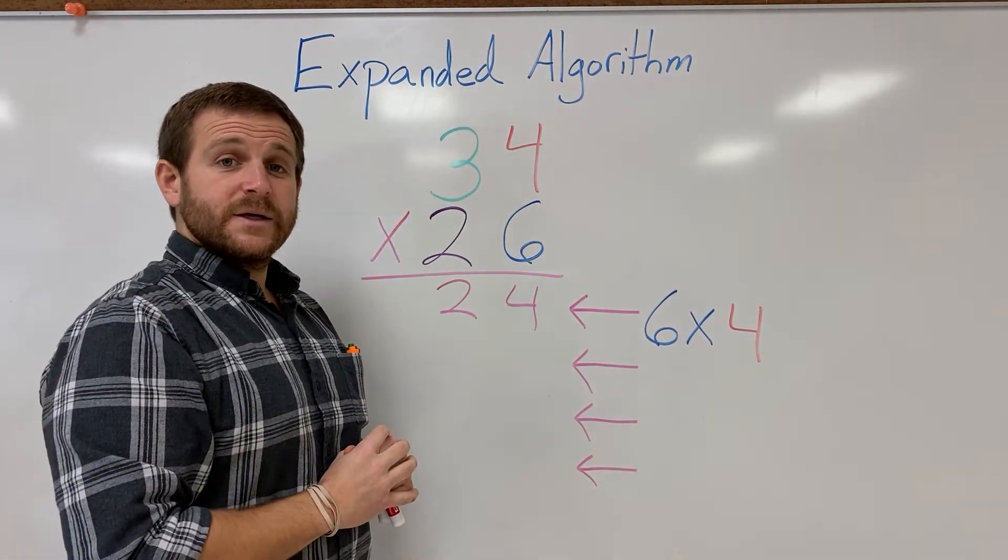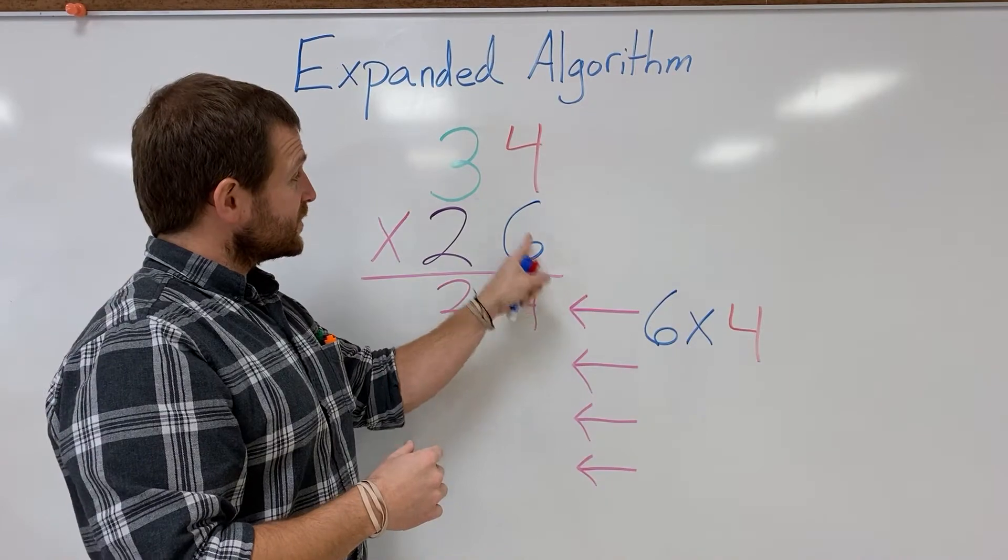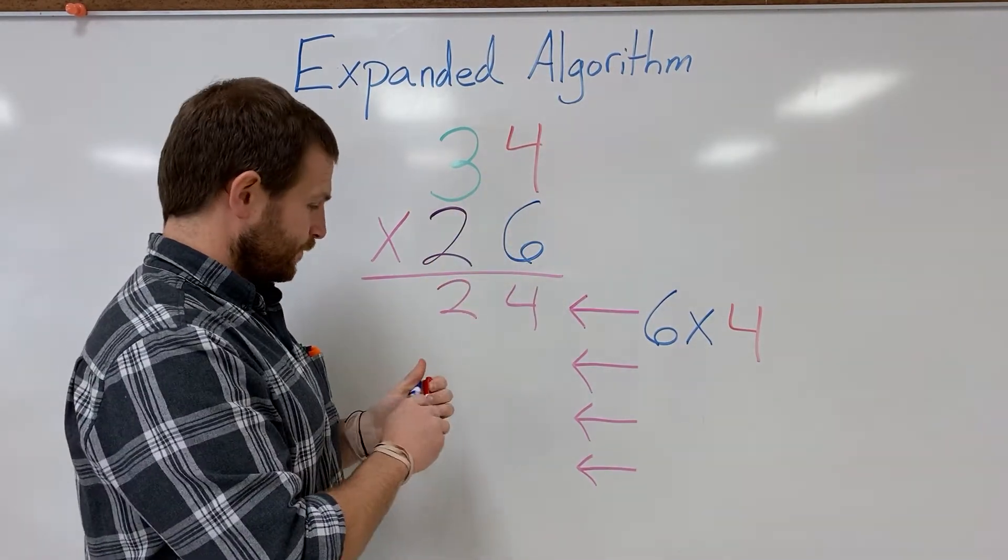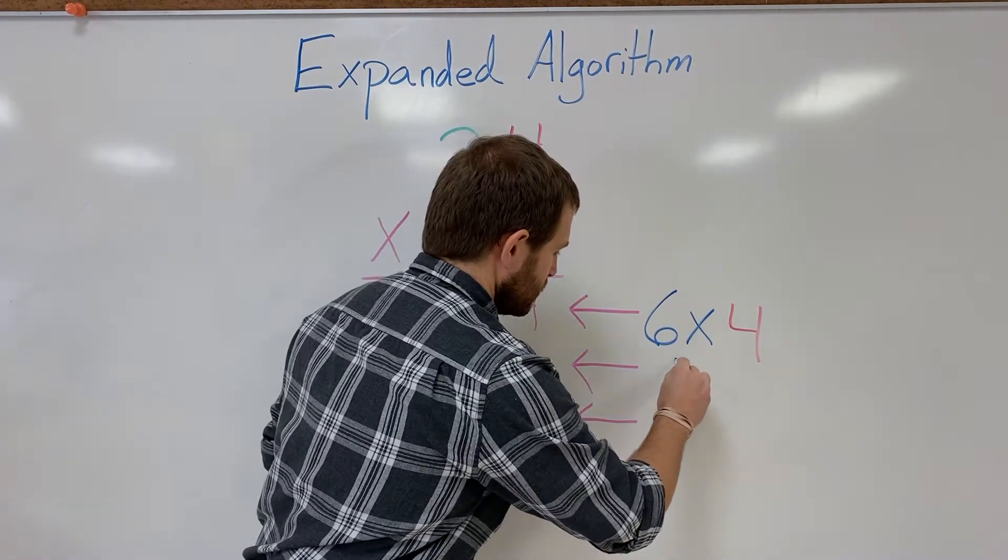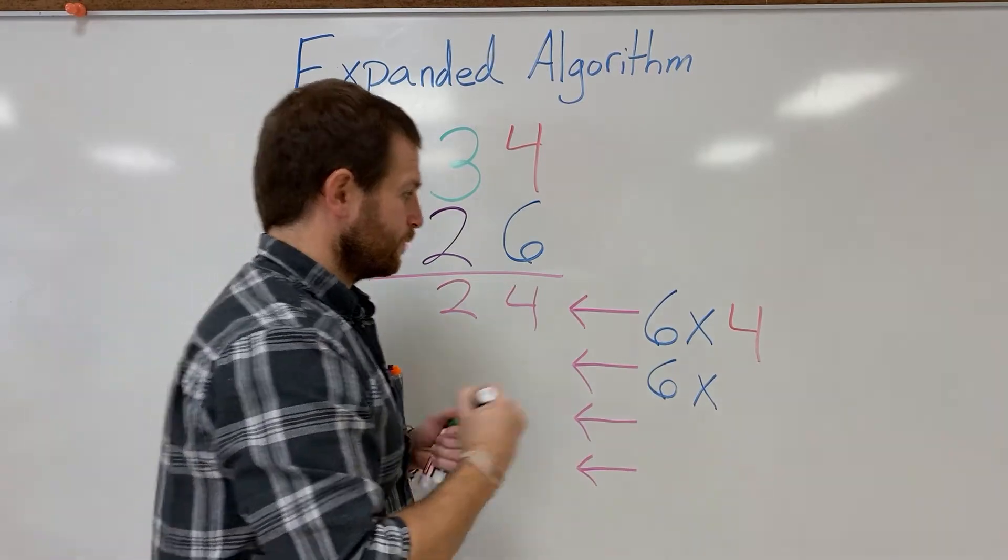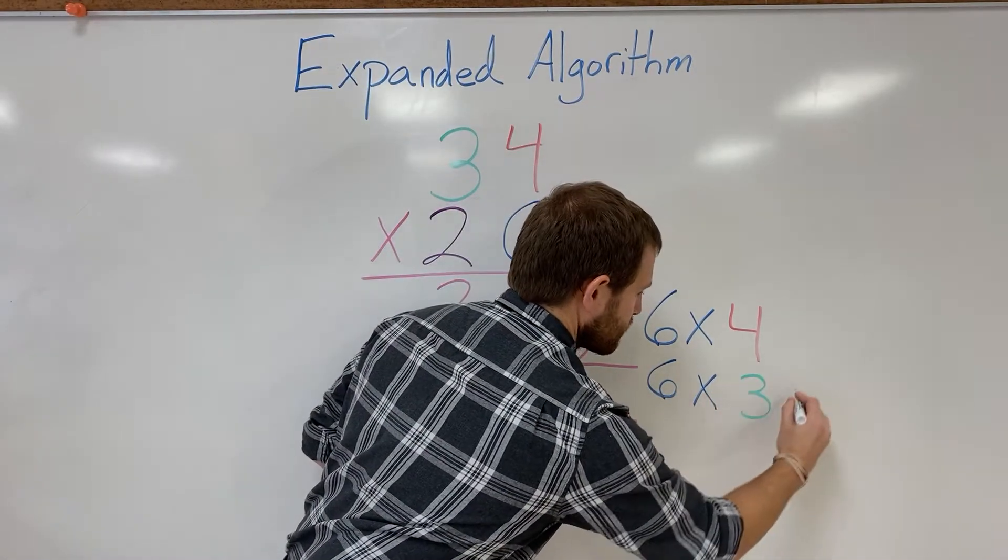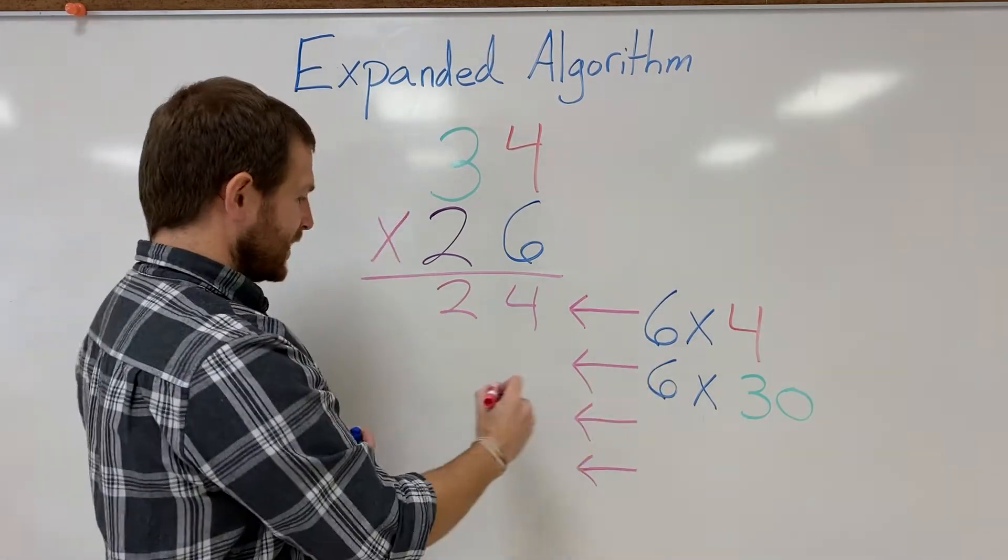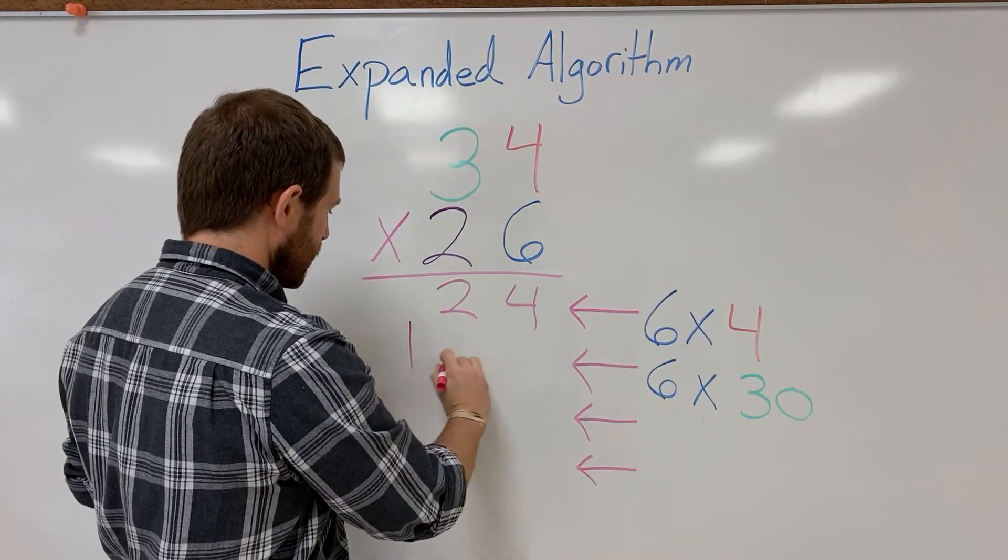Next up, I want to do my singles times my tens, so 6 times 30. 6 times 30 is gonna get me 180.